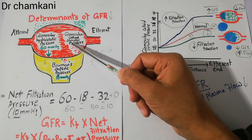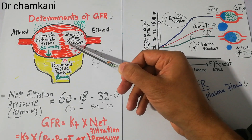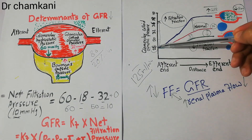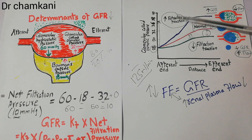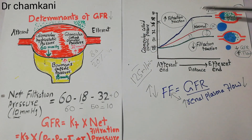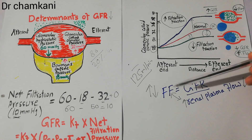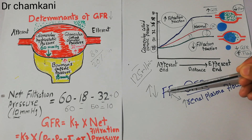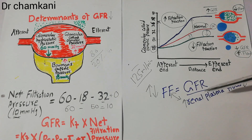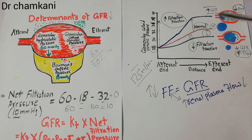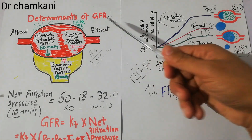To sum it up, glomerular colloid osmotic pressure is a very important determinant of GFR. It can increase or decrease GFR through two main factors: first, an increase in arterial colloid osmotic pressure elevates glomerular colloid osmotic pressure from the start; second, increasing the filtration fraction — by decreasing renal plasma flow or increasing GFR — also increases it. The filtration fraction equals GFR divided by renal plasma flow, so plasma flow and filtration fraction are inversely related. Thanks for watching.